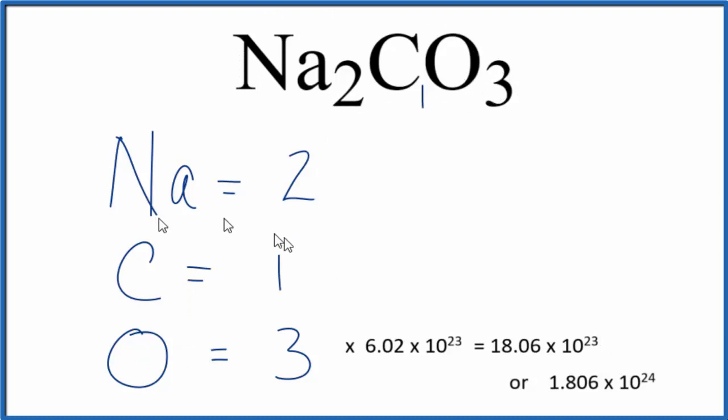If we wanted to know how many carbon atoms were in one mole of sodium carbonate, it would just be one times Avogadro's number, or 6.02 times 10 to the 23rd.